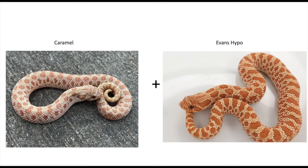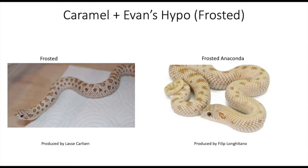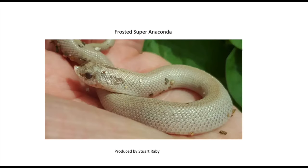Next up we're going to combine caramel with the Evans hypo gene, which looks very similar. When you combine those you get what's called a Frosted — a very cool combination. So you have the frosted, the frosted anaconda, and then an example of a frosted superconda.